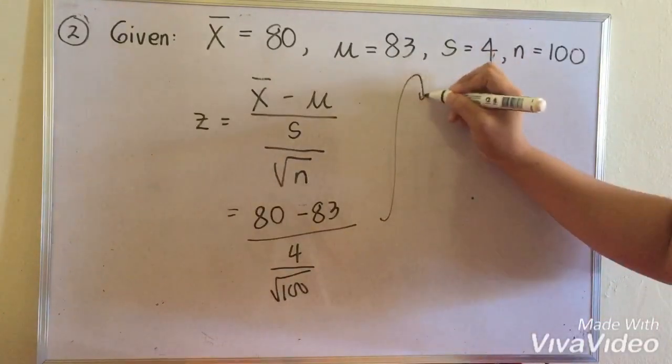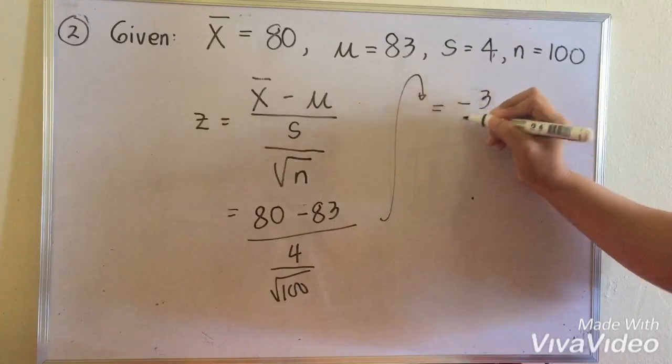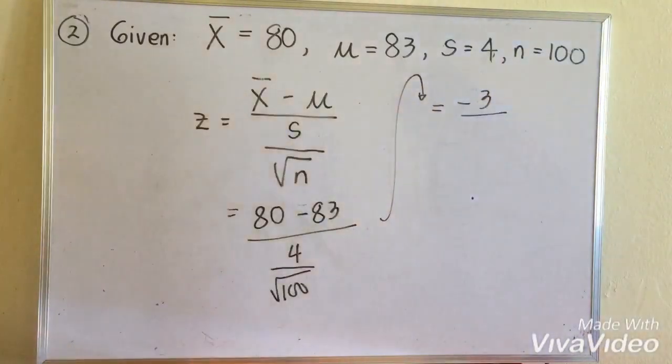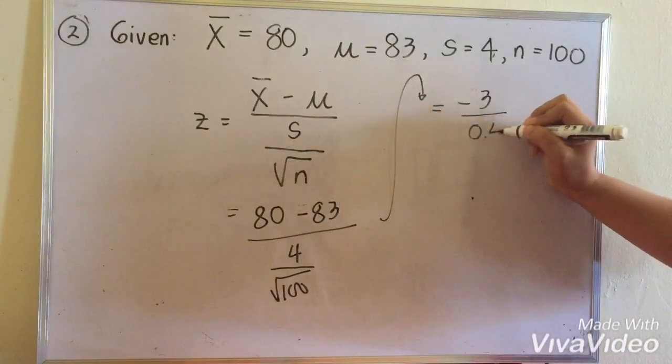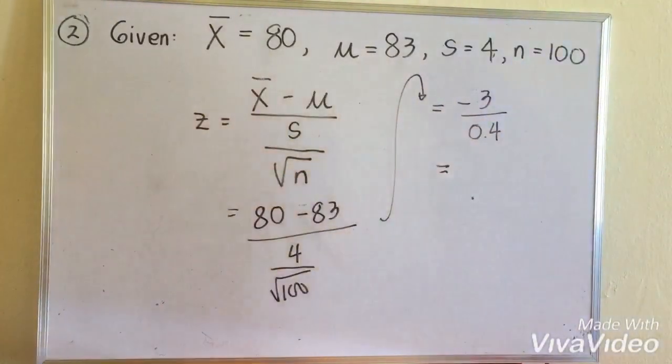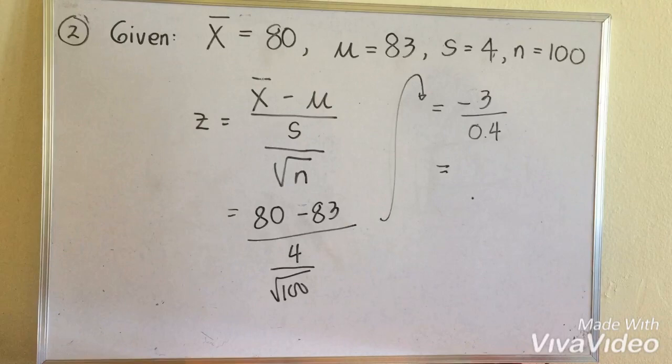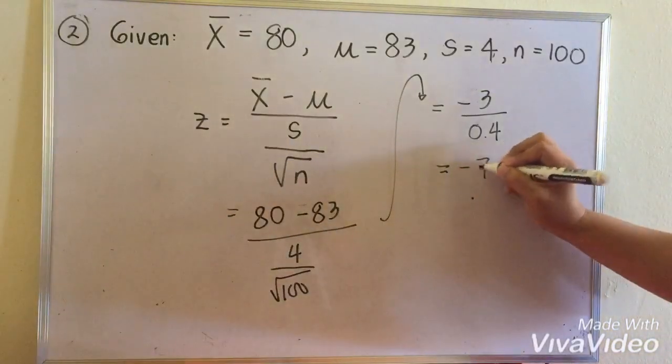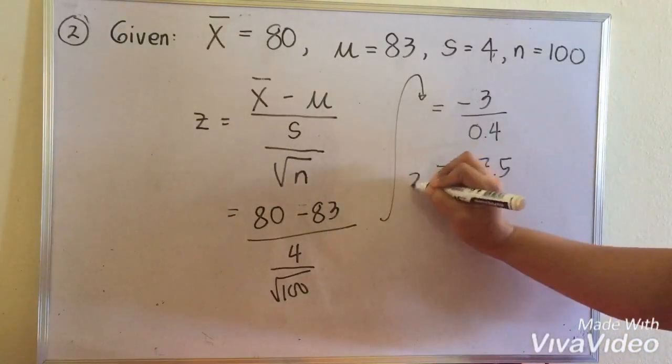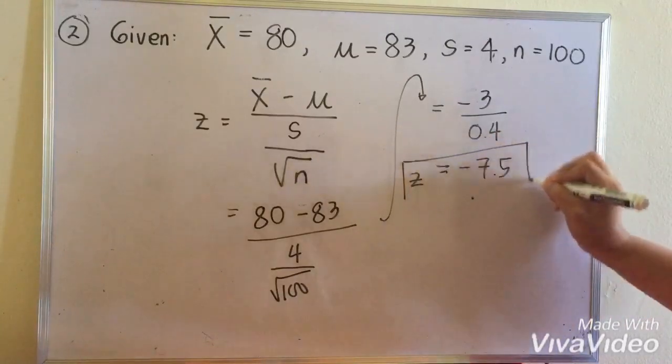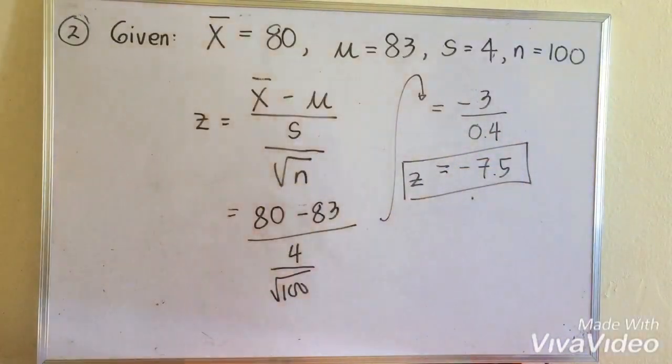If we continue solving, that's going to be negative 3, over 4, over the square root of 100, which is 0.4. That is negative 7.5. So our test statistic is negative 7.5.